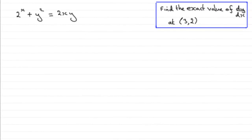Now in this question we're given this equation for a curve C and we've got to find the exact value of dy/dx for a point on the curve at (3,2). So how do we do this?